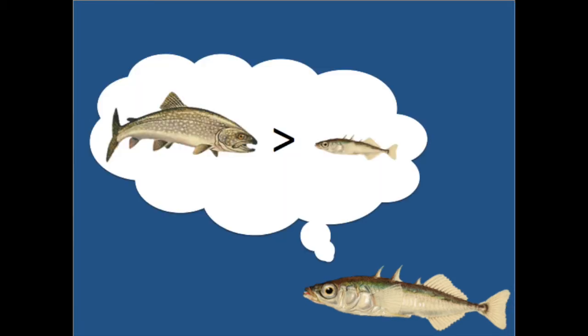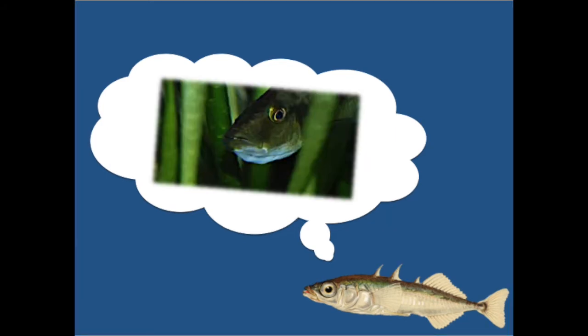As you saw when that big fish tried to eat me earlier, we sticklebacks, both marine and freshwater, are relatively small fish. While this does make us easy prey for big fish, it also makes it easier for us to hide. This is where the freshwater sticklebacks and I begin to differ. So let's go back in time to see how this happened.